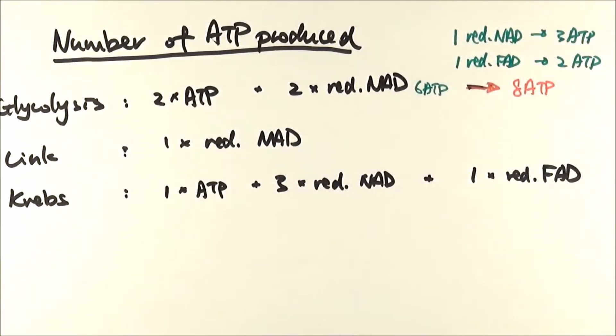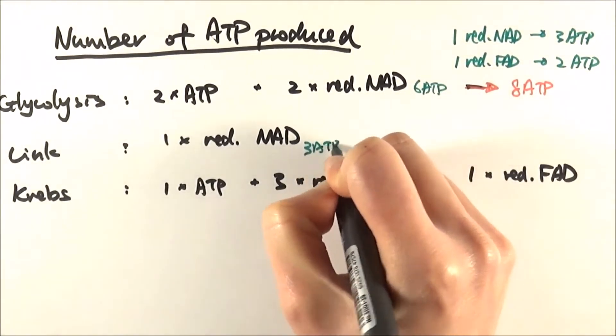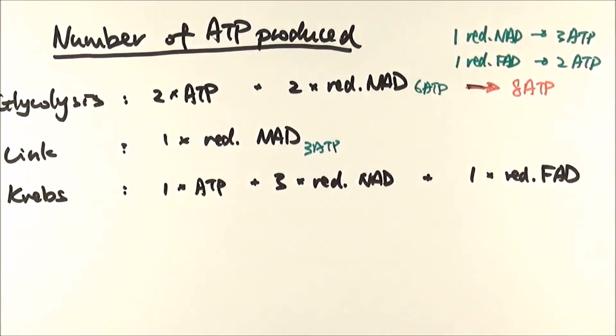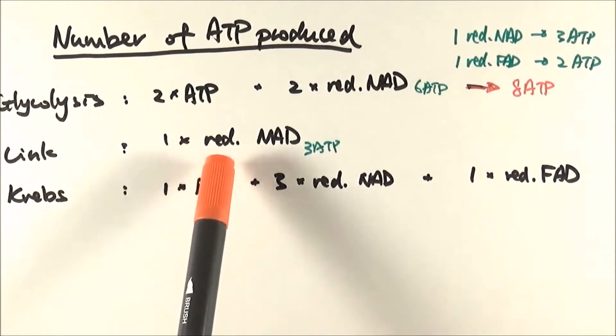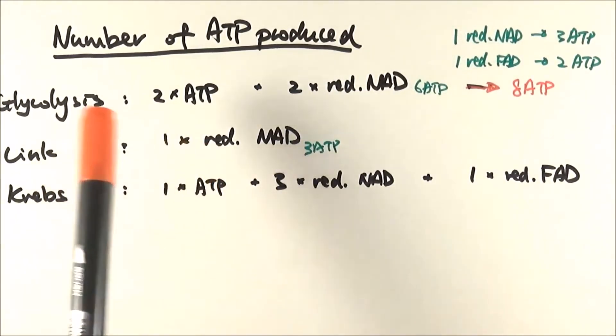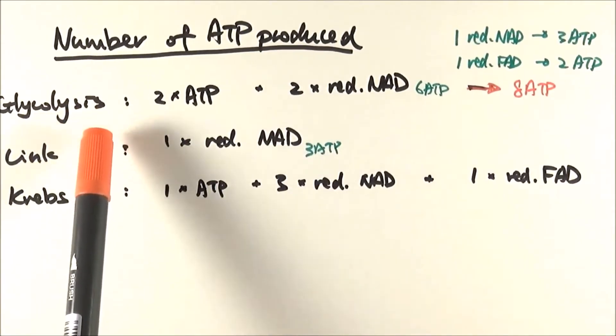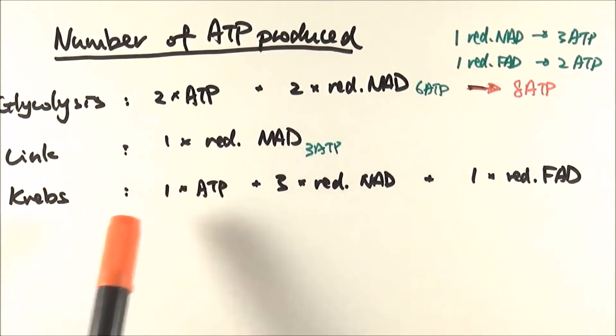In link reaction, we made 1 reduced NAD and therefore we can make 3 ATP from that. But keeping in mind that we're considering 1 pyruvate only, whereas in glycolysis we've made 2 pyruvate and they both go into link and Krebs cycle.